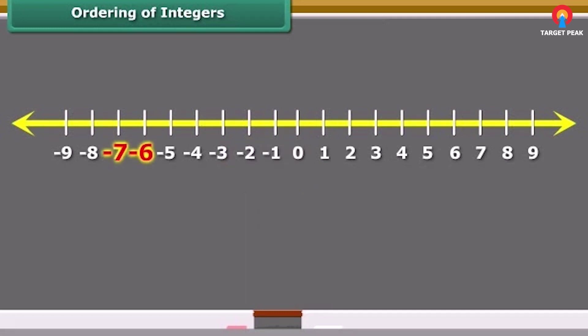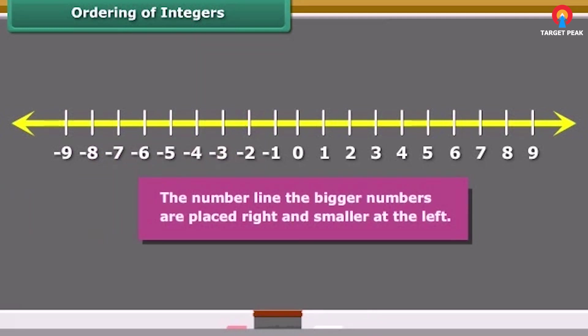Again, minus two is on the right of minus seven. So minus two is greater than minus seven. Thus, we see that on the number line, the bigger numbers are placed right and smaller at the left.